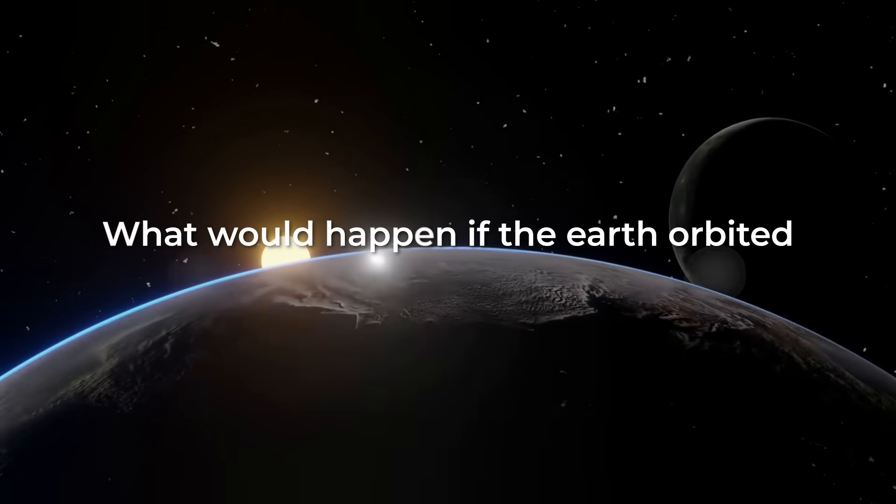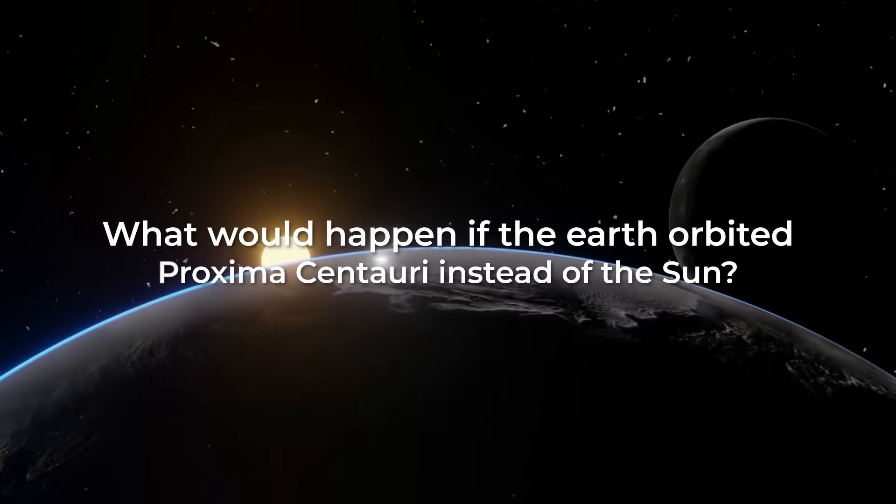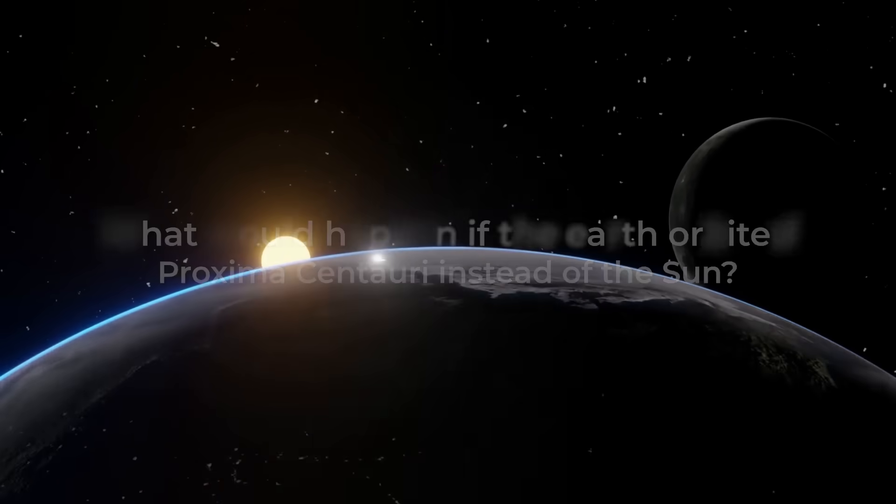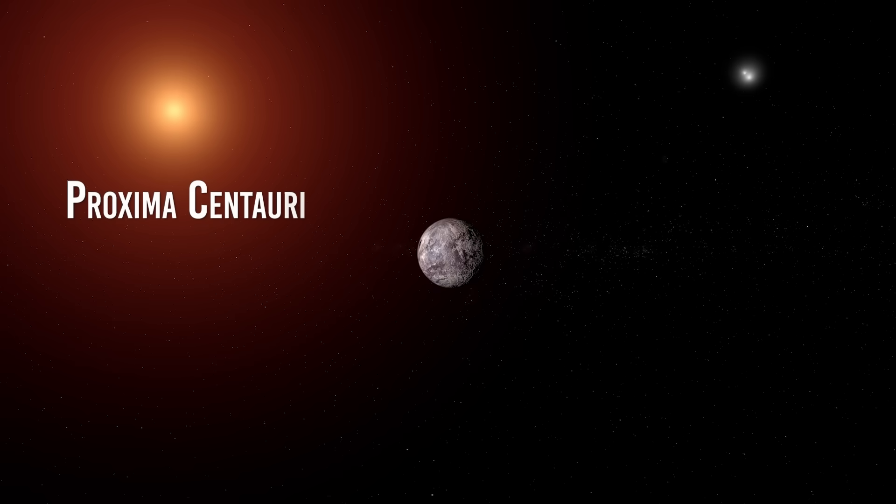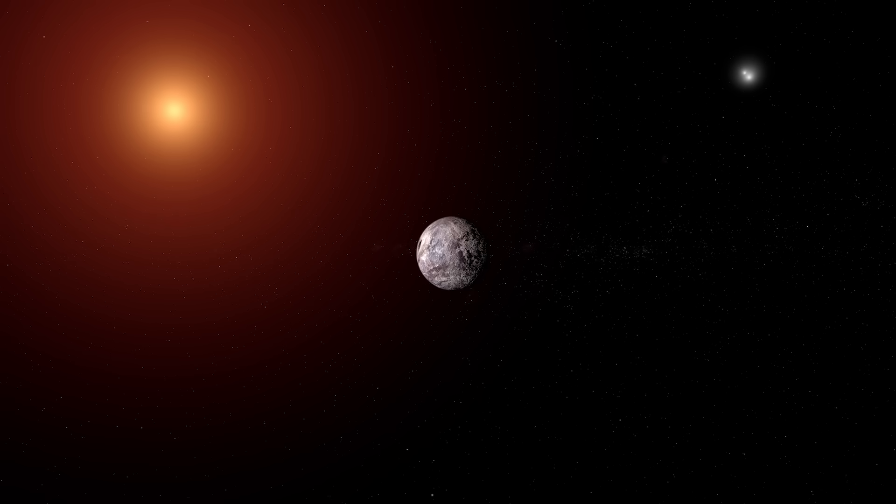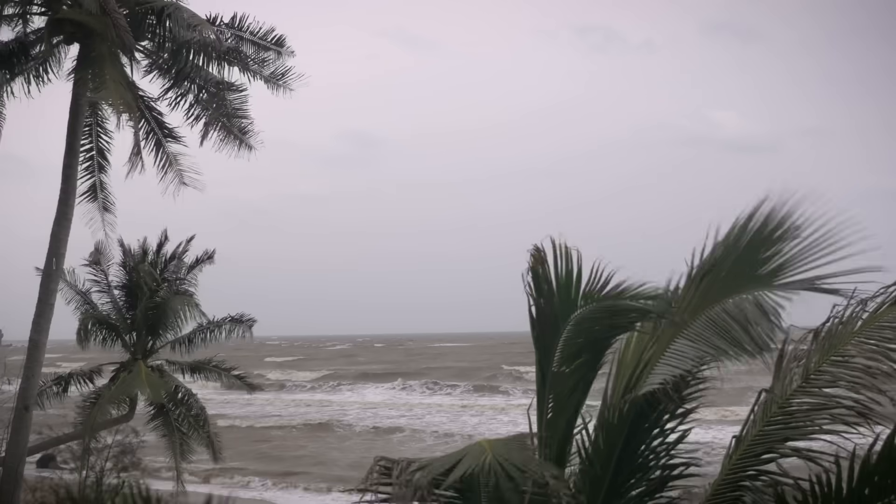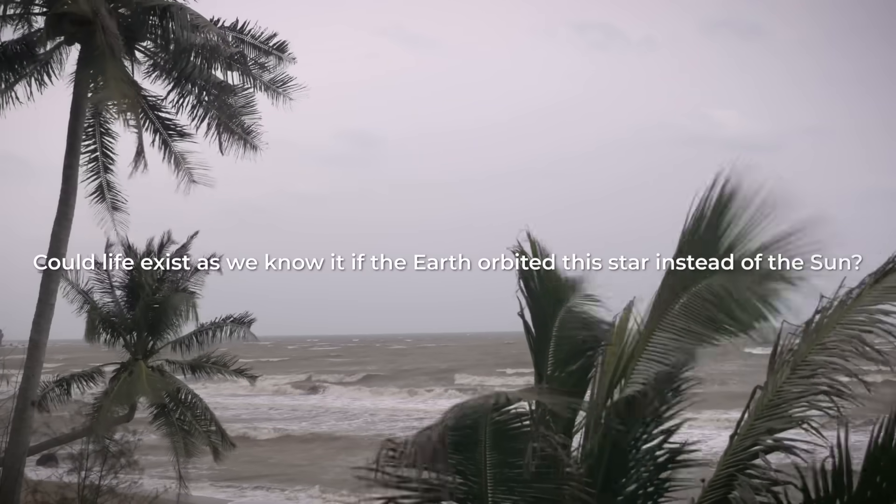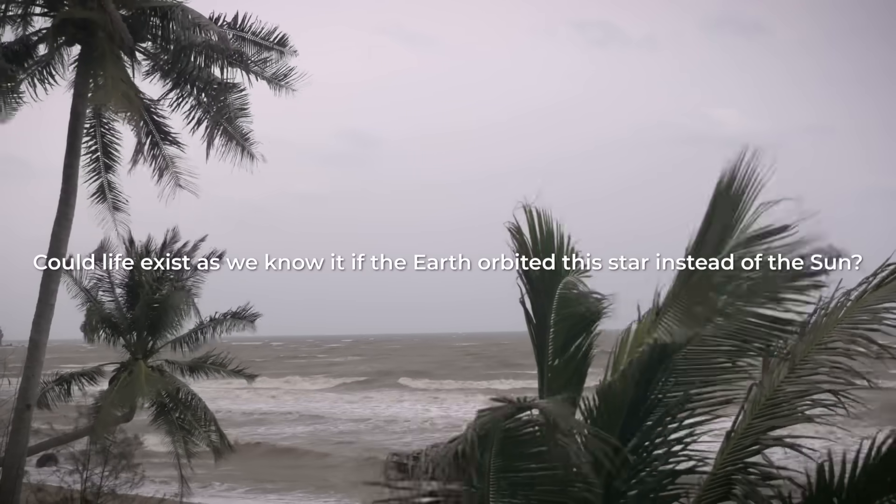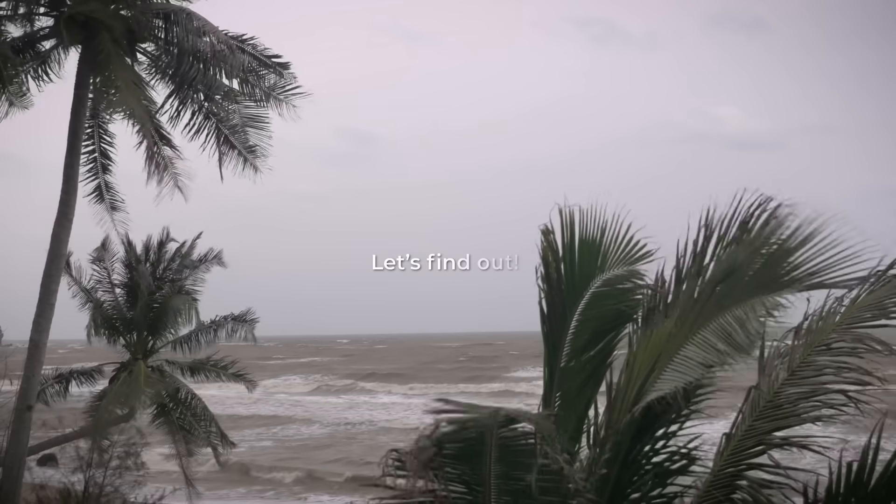What would happen if the Earth orbited Proxima Centauri instead of the Sun? Proxima Centauri is a red dwarf, smaller and less hot than the Sun, but at the same time it has more solar activity and emits more radiation. Could life exist as we know it if the Earth orbited this star instead of the Sun? Let's find out.